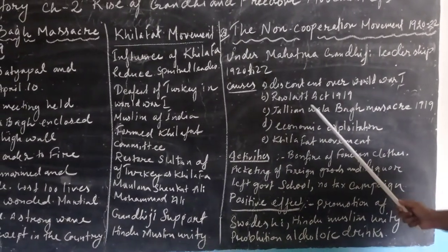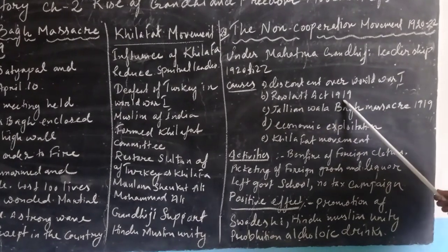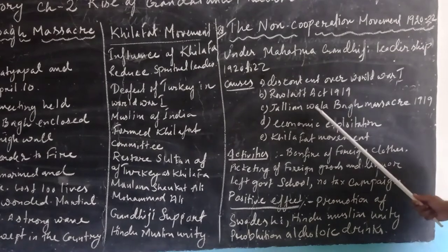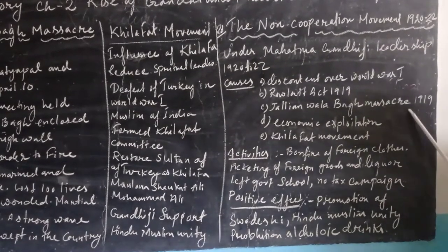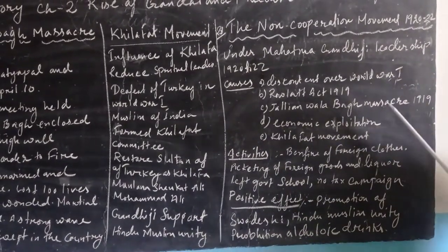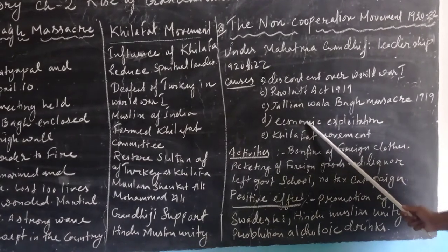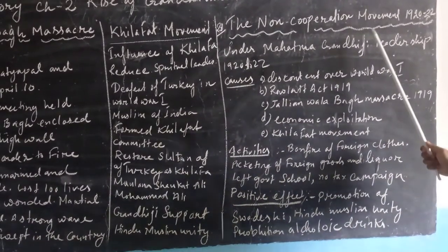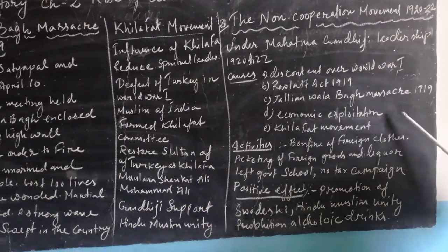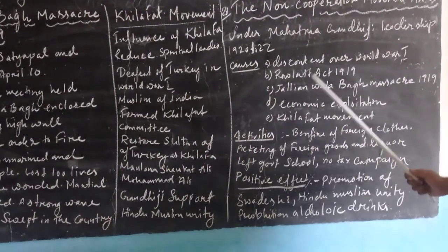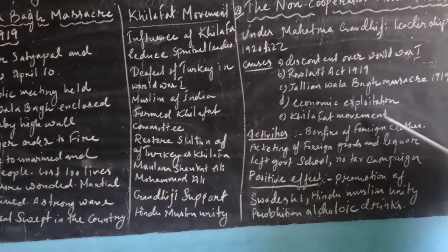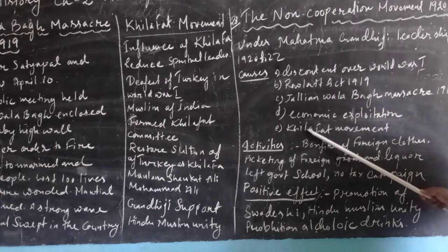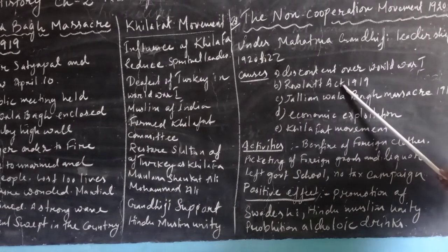Third cause was the Jallianwala Bagh massacre of 1919, which we also discussed. Fourth was economic exploitation by the British of the Indian people. Fifth was the Khilafat movement, which was also one of the reasons for the Non-Cooperation Movement. So these are the five main causes of the Non-Cooperation Movement.